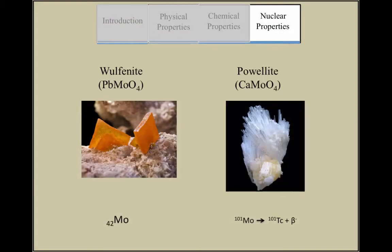Molybdenum is found in minerals such as wulfenite and powellite. It has 35 known isotopes, of which 7 occur naturally.